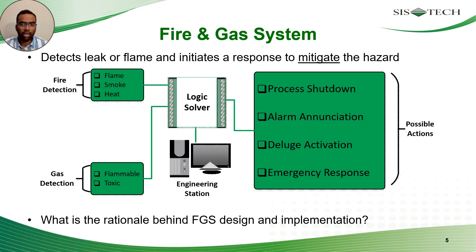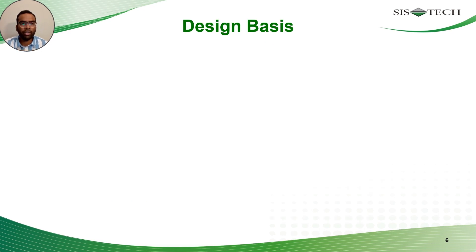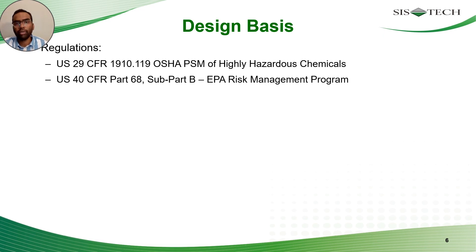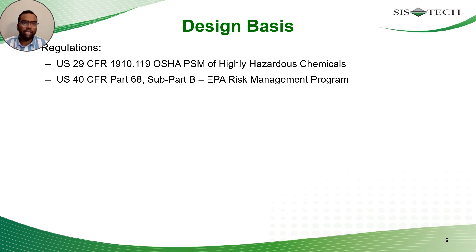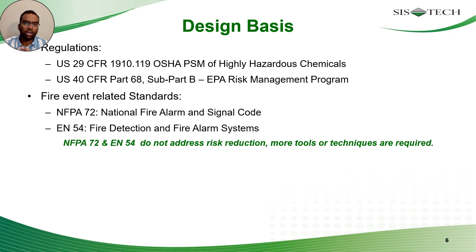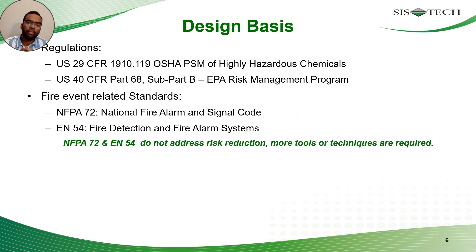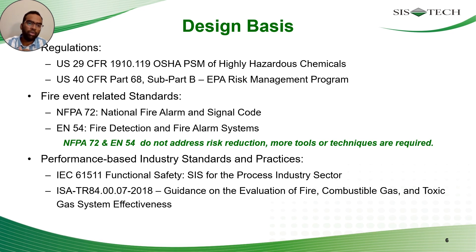What is the rationale behind FGS design and implementation? In the USA, two regulations are applicable to chemical processes: OSHA PSM and EPA RMP. When it comes to detection of events resulting in fire, the industry follows NFPA 72 and European Norm 54. However, these do not apply to toxics at all. While they provide strong prescriptive guidelines as a basis for FGS design, they are not enough since they lack a performance-based approach and do not address toxic releases. Hence, more tools and techniques are required.